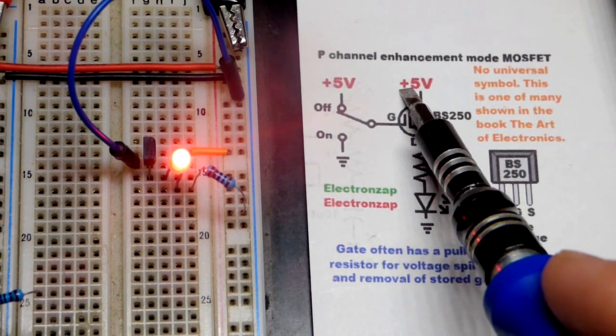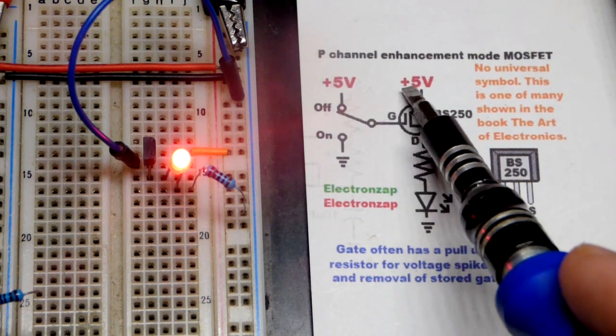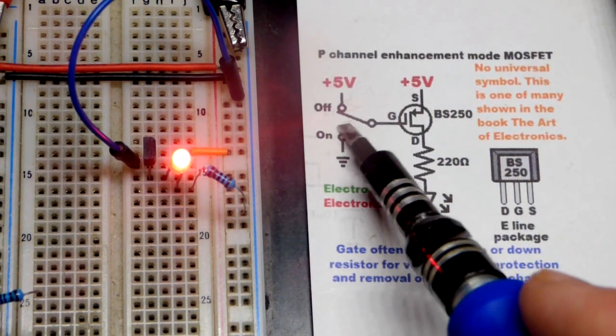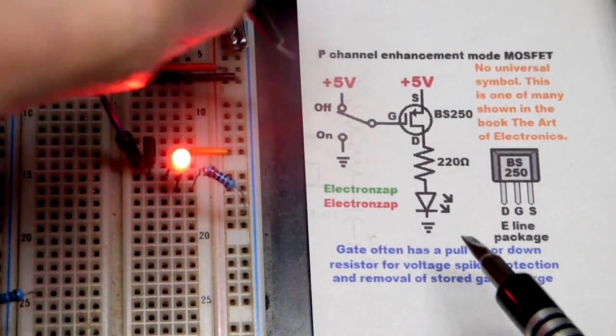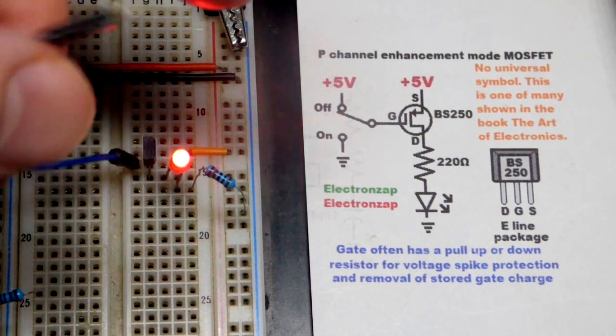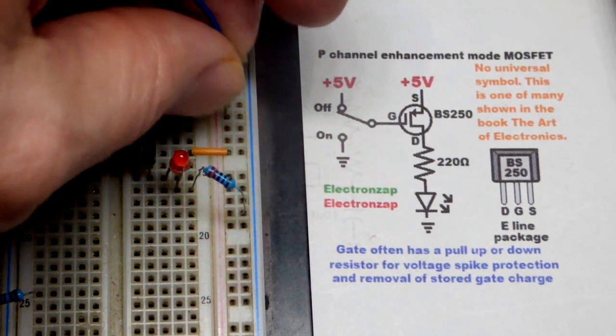Usually you use like 10k right there. So it just gives the gate basically an instant charge while the jumper is floating. Right now it's going to hold whatever charge it has other than the stray signals that it's picking up.